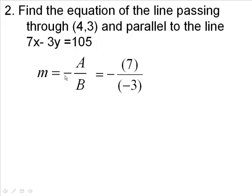So that when we take the opposite of a over b, we're going to take the opposite of negative 7 thirds, we're going to have plus 7 thirds. So this is the slope of this line, and every line that's parallel is going to have the same slope.